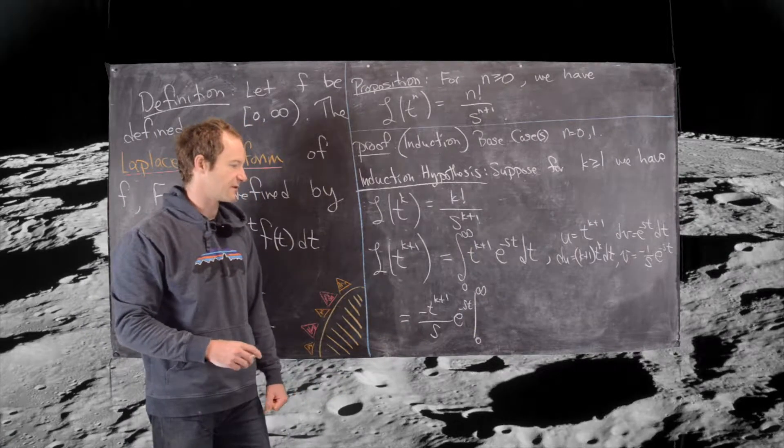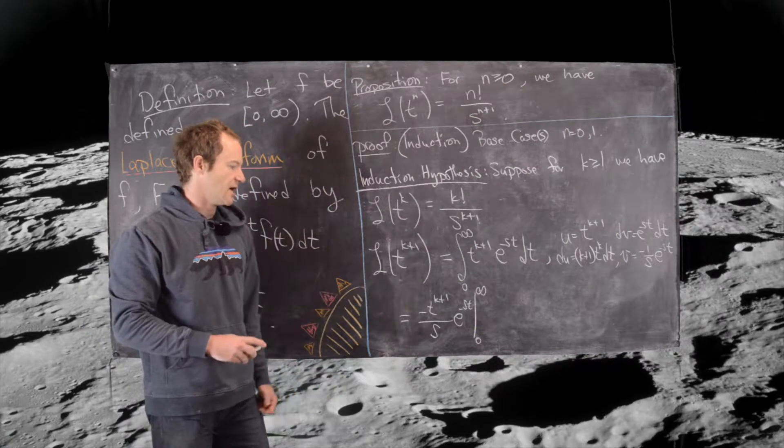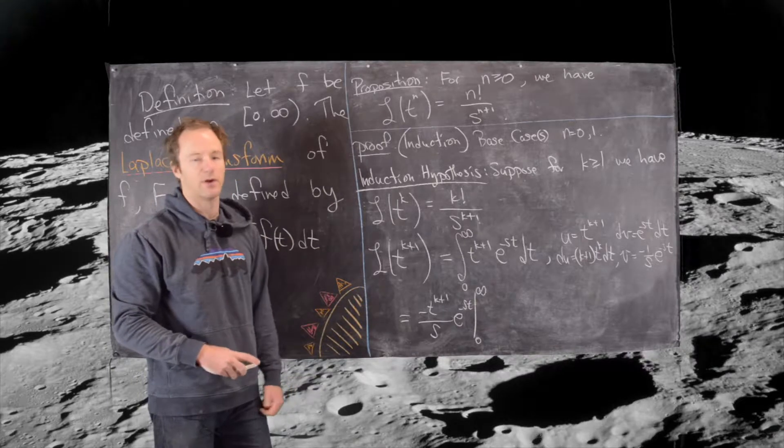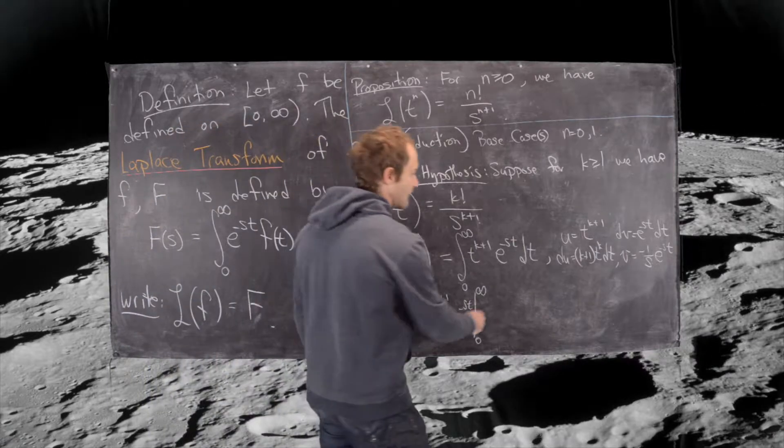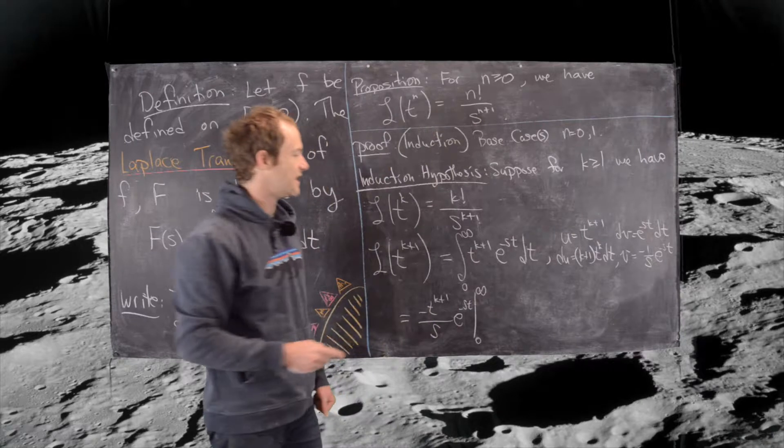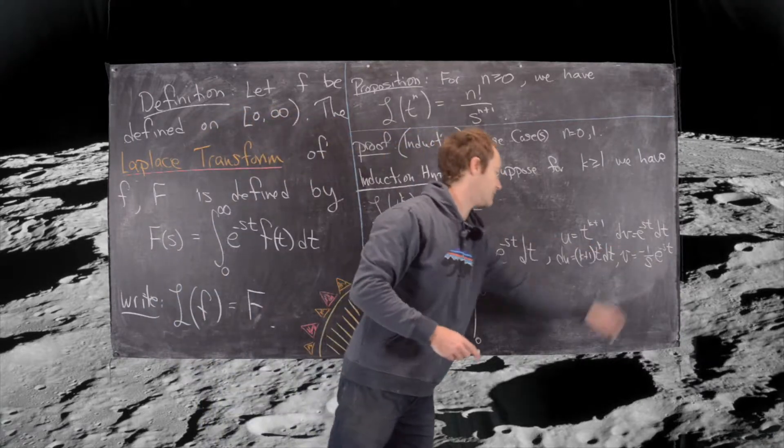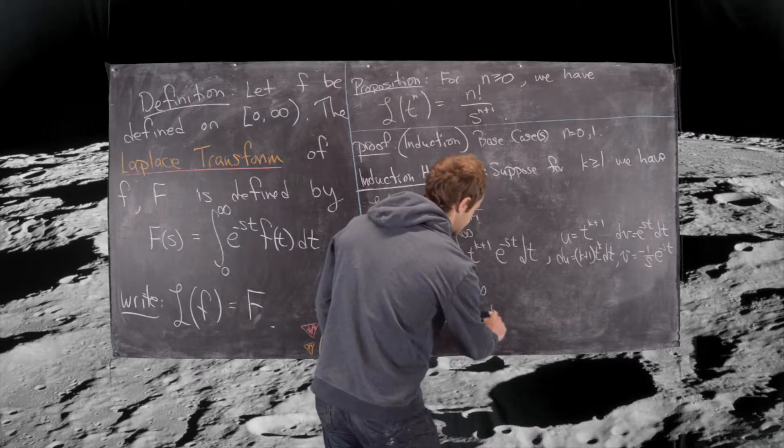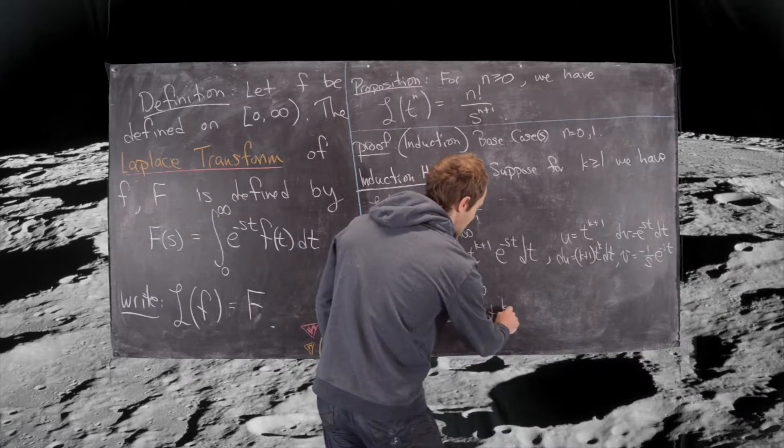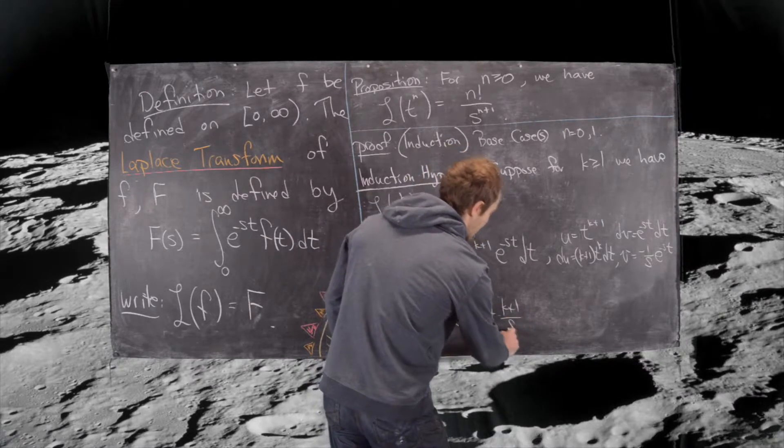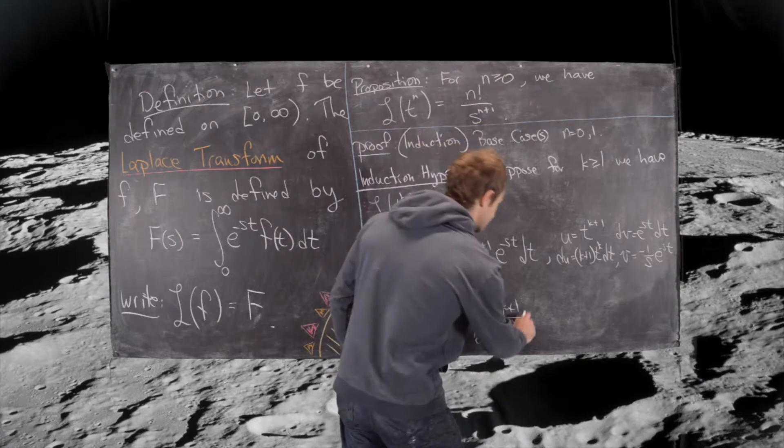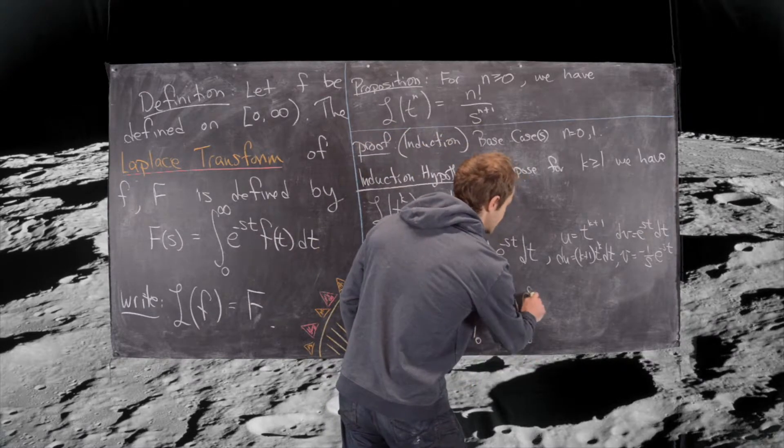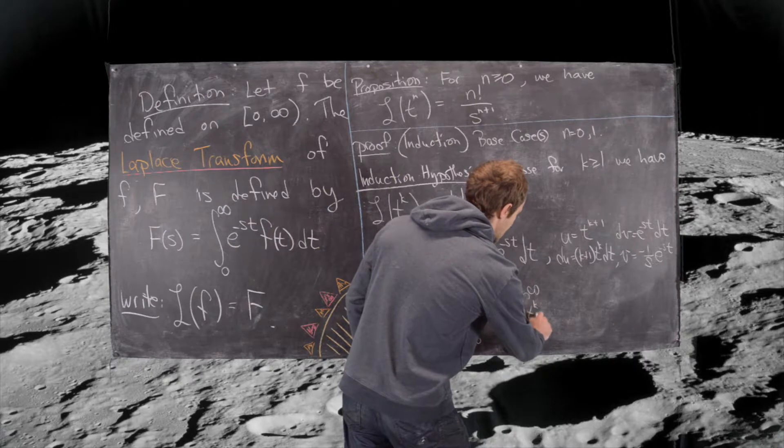I'll play it a little fast and loose here but you can review something from calculus 2 to see what will happen with this bit. Then we have minus a negative v du, and so notice we've got a negative built in there so that's going to give us plus k plus 1 over s times the integral from 0 to infinity of t to the k times e to the minus st dt.